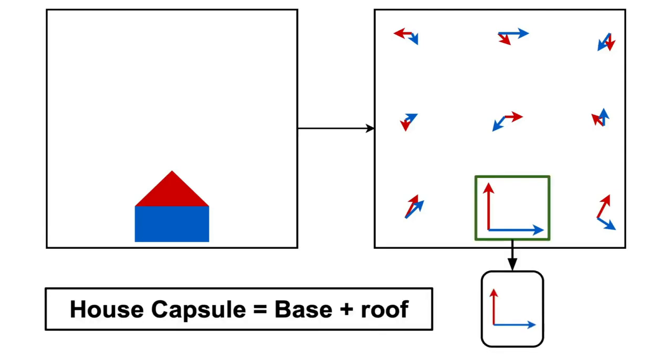For instance, if one of our low-level capsules detected the following rectangle and another one the following triangle at the bottom of the image, then the routing algorithm would transfer their outputs to the capsule that dictates a house, resulting in a match.